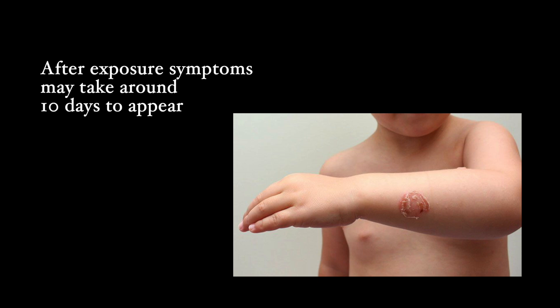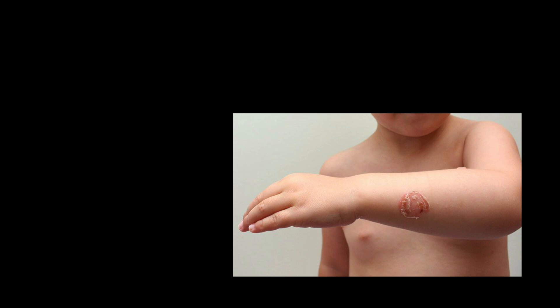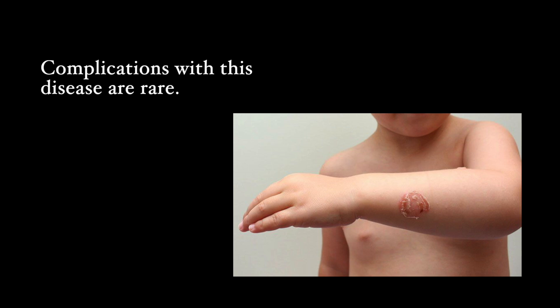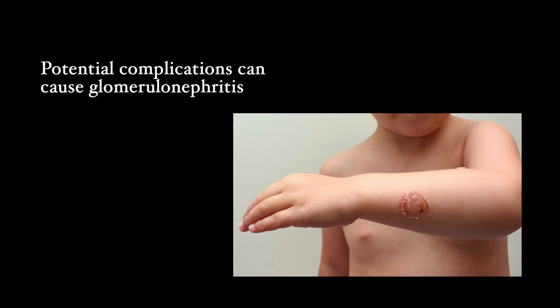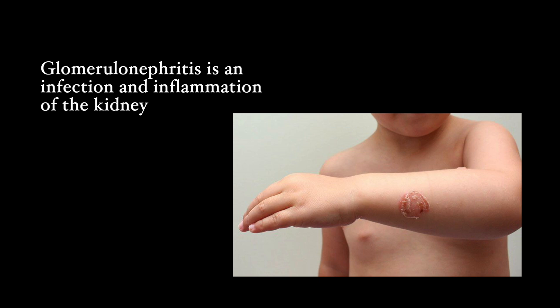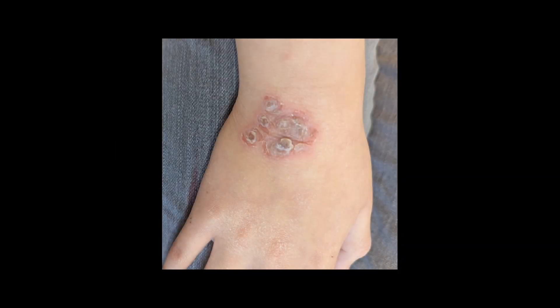It may take about 10 days for symptoms to appear after exposure to someone with impetigo. Complications from this disease are rare, but one potential complication is glomerulonephritis — an inflammation of part of the kidney. We don't see it very often, but parents should know that when kids have impetigo, there is a possibility of kidney-related complications.